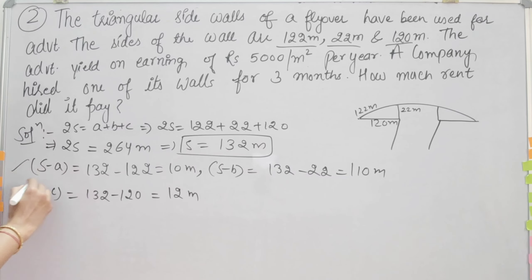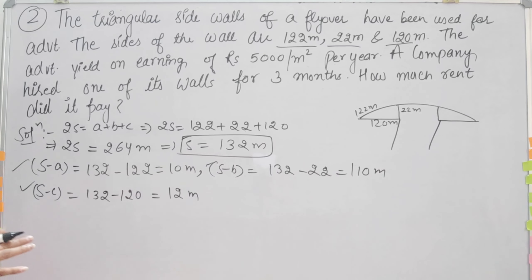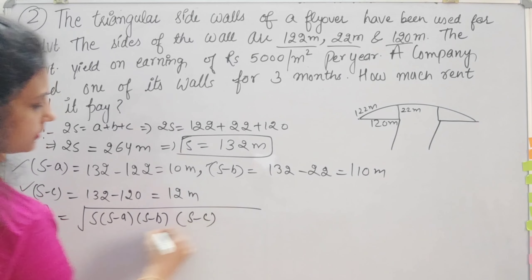We have all these quantities. Now we have to put them in the formula. The area of triangle is under the root of s times s minus a times s minus b times s minus c.